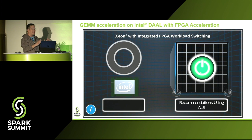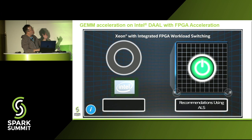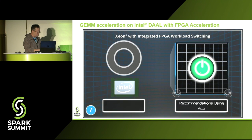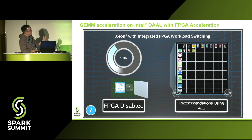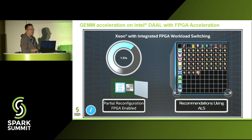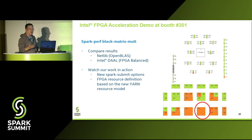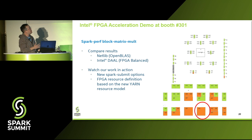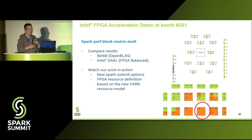On an already optimized environment, how do you gain more performance? You can use Intel FPGA products to gain even more. As shown in this demo, for workloads like ALS, if you use FPGA with DAO, you can get 53% more performance gain compared to using CPU only. If you want to see our demo, we have a demo desk at the Intel booth 301 where you can compare results between NetLib and Intel DAO using FPGA, and watch how we added the new options and defined FPGA resources on YARN.